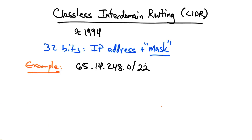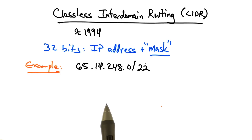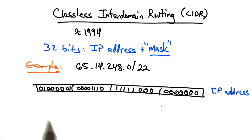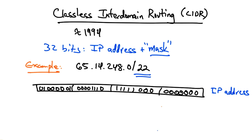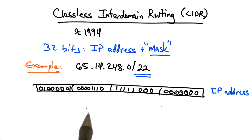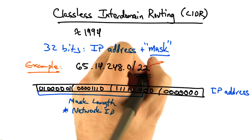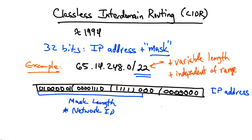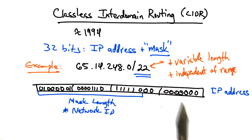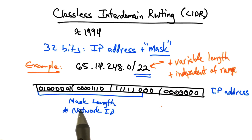For example, suppose we have an IP address like 65.14.248.0/22. In this case, our 32 bits look like so, but this doesn't tell us how long the network ID and how long the host ID should be. The /22 indicates the mask length, which says that the first 22 bits should represent the network ID. The key is that this mask can be variable length, and the mask length no longer depends on the range of IP addresses that are being used.